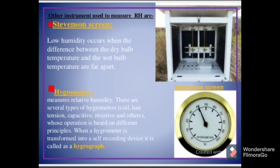Other instruments used to measure relative humidity include the Stevenson screen. Low humidity occurs when the difference between the dry bulb temperature and the wet bulb temperature are far apart. The hygrometer measures relative humidity and comes in several types: coil, hair, tension, capacity, resistive, and others, whose operation is based on different principles. When a hygrometer is transformed into a self-recording device, it is called a hygrograph.